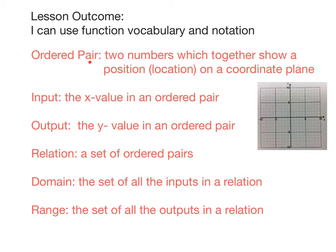We're going to start with the ordered pair. An ordered pair is a set of two numbers which together show a position or location on a coordinate plane. This right here is a coordinate plane. We've got our x-axis right here, and we've got our y-axis right here. But for now, let's just talk about an ordered pair.